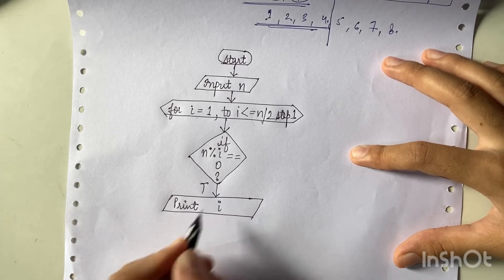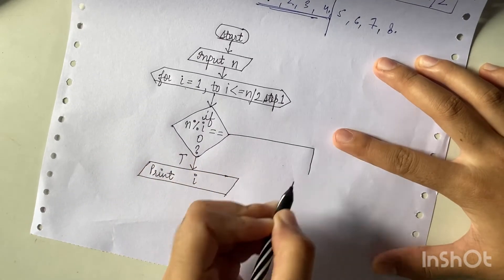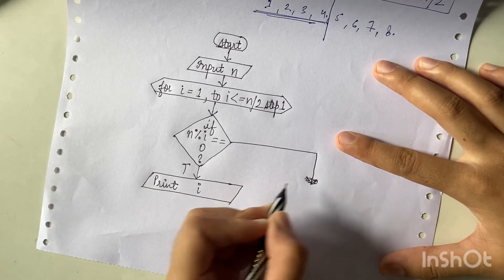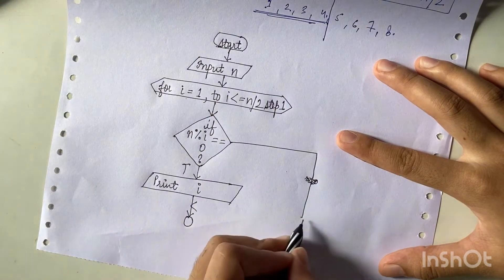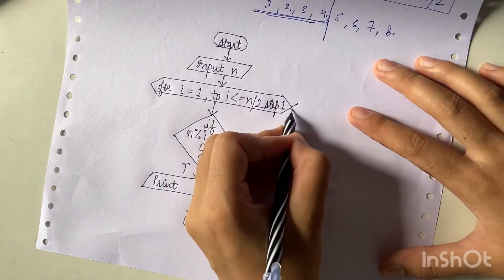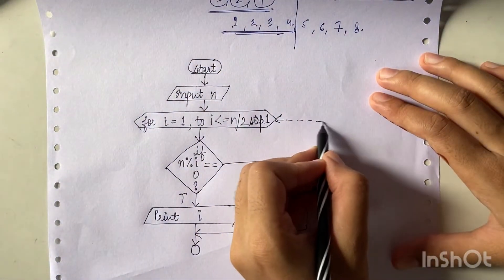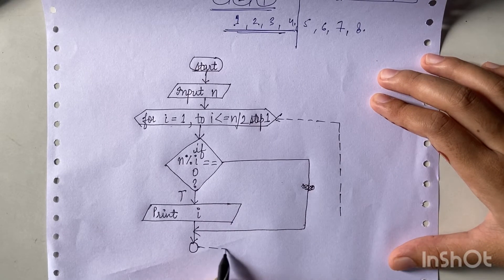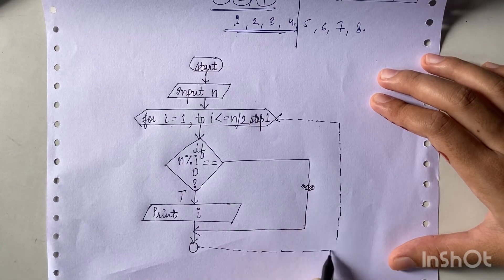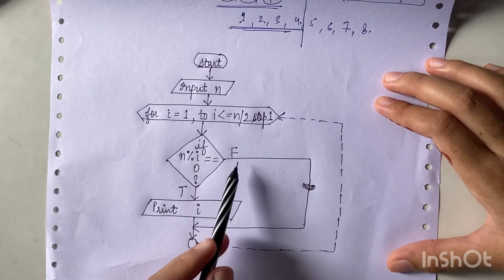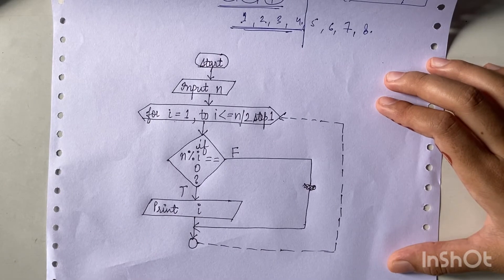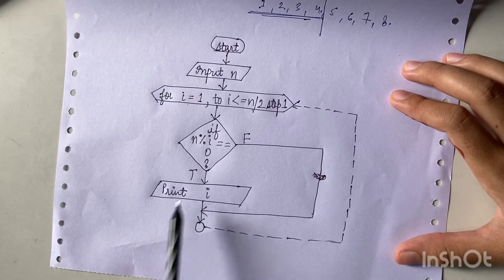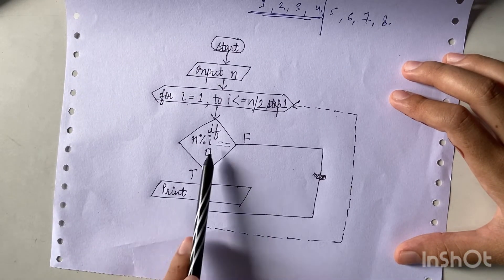If the condition is false, we connect back to the for loop connector so the loop continues with the next value of i. After the loop condition becomes false, we come out of the loop and the code stops. So that's how the for loop and if condition work together, and then we write Stop.